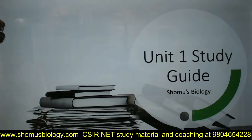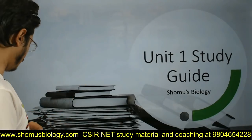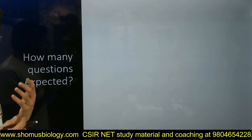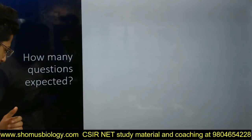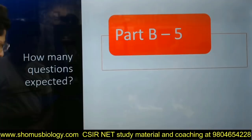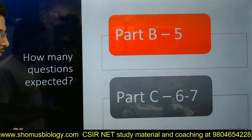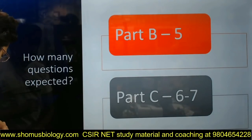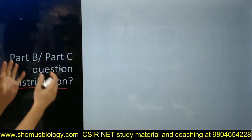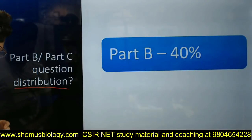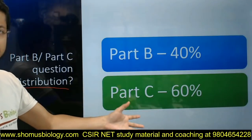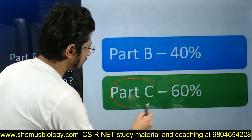Let's start with Unit 1 - Biochemistry in CSINet. The first question in a study guide is: how many questions can you expect from Unit 1? For Part B, expect 5 questions; for Part C, expect around 6-7 questions. Topic distribution is approximately 40% Part B and 60% Part C questions from Unit 1.